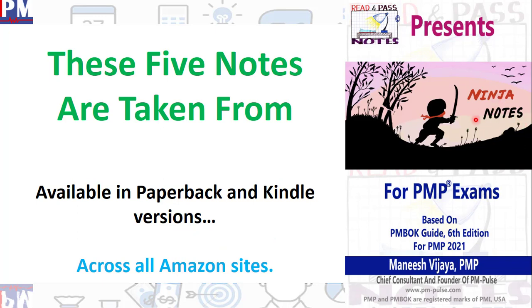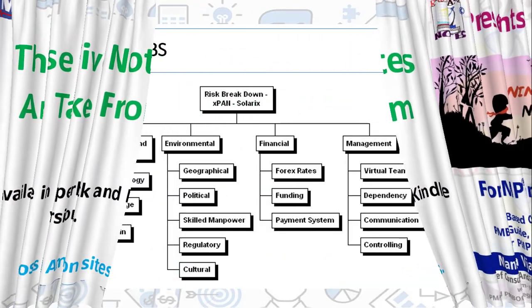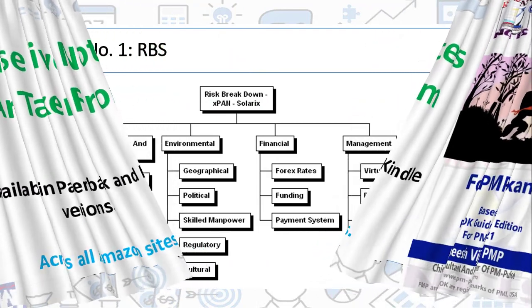Ninja Notes is basically containing all the notes, every conceivable note that will be needed to not only pass PMP exams based on 2021, but to be able to ace it. It's available in paperback as well as Kindle version and it's completely colored. Let's at least look at the five notes from these Ninja Notes.